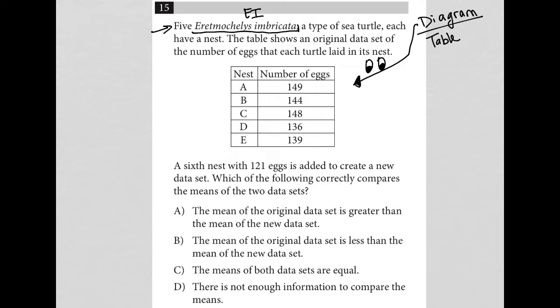The table shows an original data set of the number of eggs that each turtle laid in its nest. Yeah, we already saw that, right? So we see those numbers, we see the nests labeled as A through E.